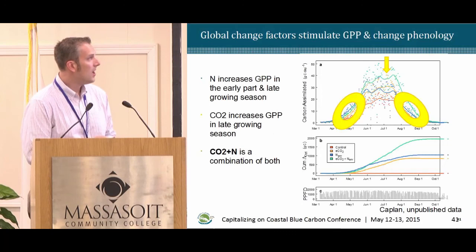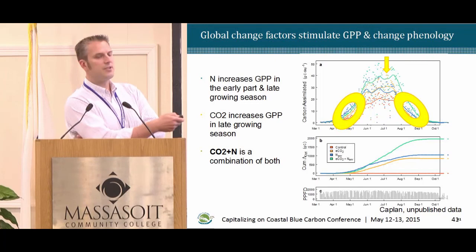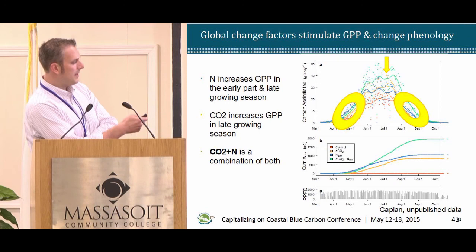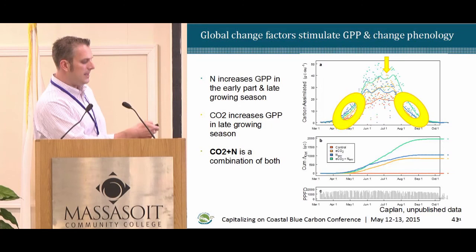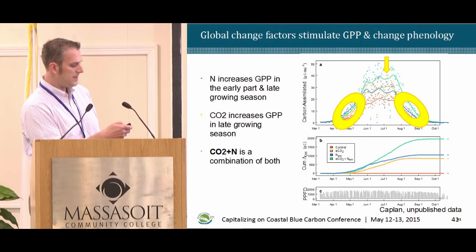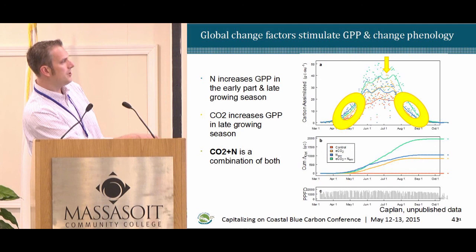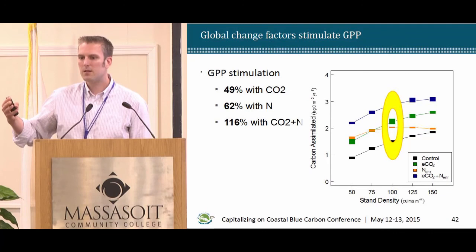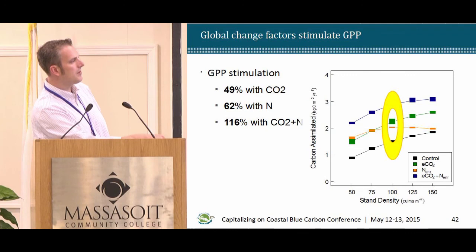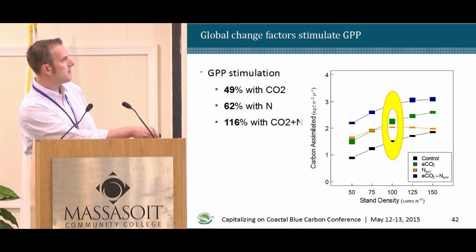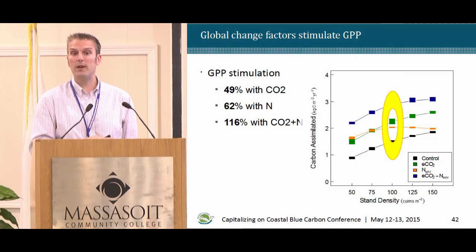The model simulation averages 10 runs showing carbon assimilation over day-of-year versus PPFD. Adding nitrogen shows a phenological shift — increased productivity in the early and late parts of the growing season. Adding CO2 shows a peak later in the growing season. CO2 plus nitrogen combines both effects. For a density of 100 stems per square meter — typical for Phragmites monocultures — CO2 stimulation is around 49%, nitrogen around 62%, and combined CO2 plus nitrogen over 116%.